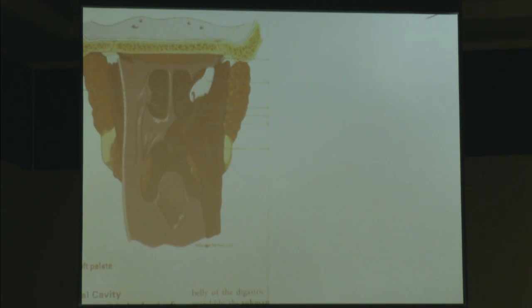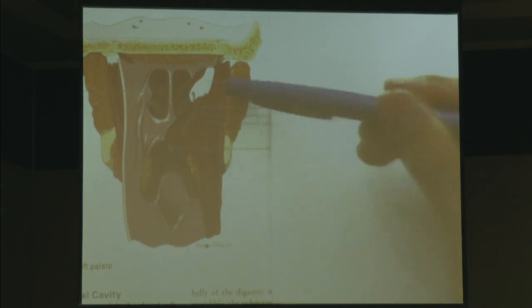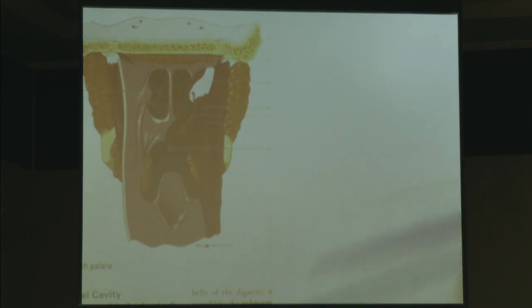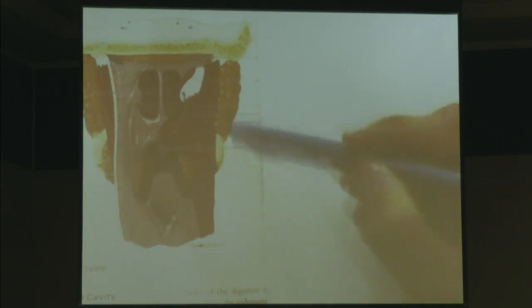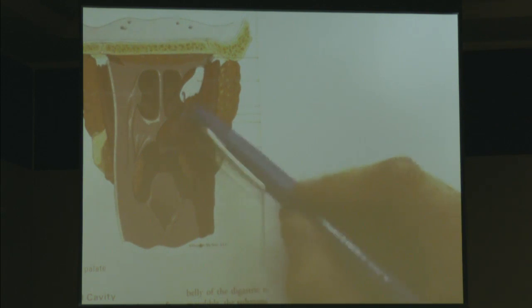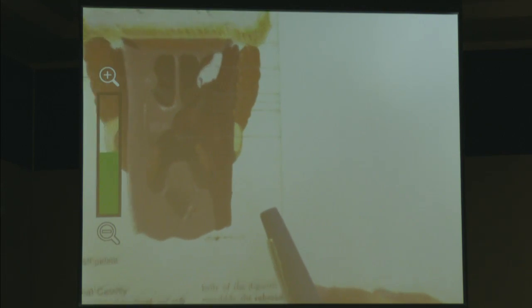Now moving to our next picture — a posterior view of our oropharynx, or the pharyngeal area. Starting with structures you'll need to recognize: these are our pharyngeal constrictor muscles — we have superior, middle, and inferior. These three pharyngeal constrictor muscles help us swallow through peristalsis. There are also three muscles in here that are extremely important — he likes to test on these.